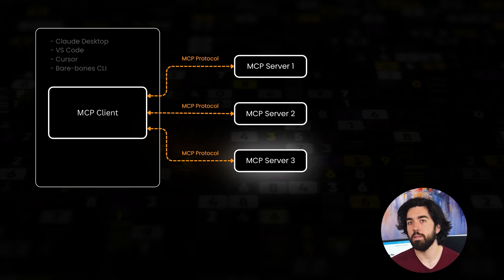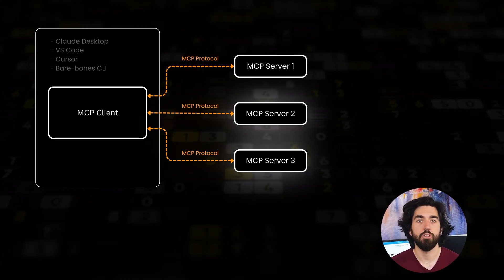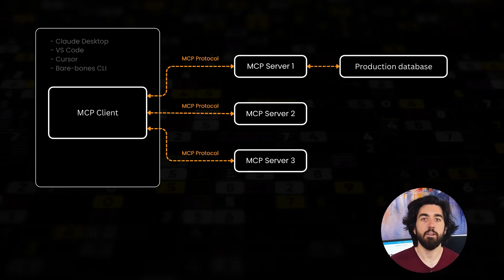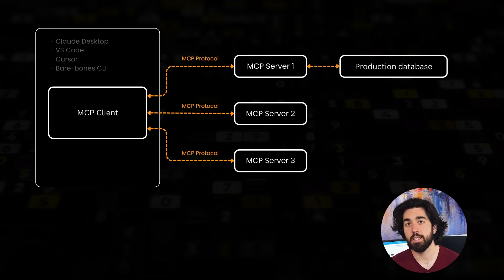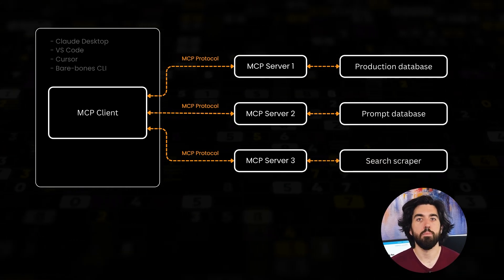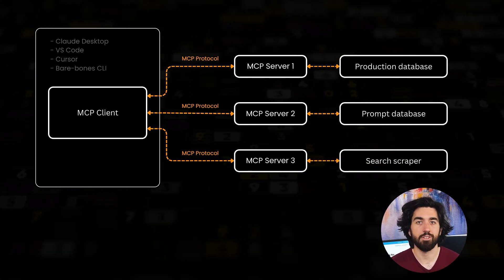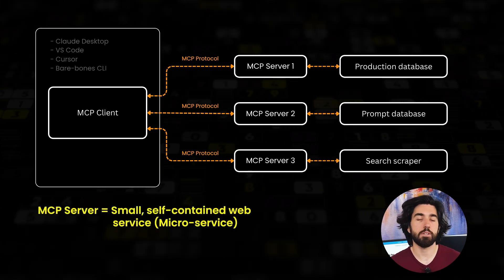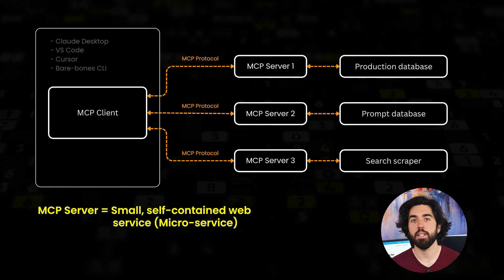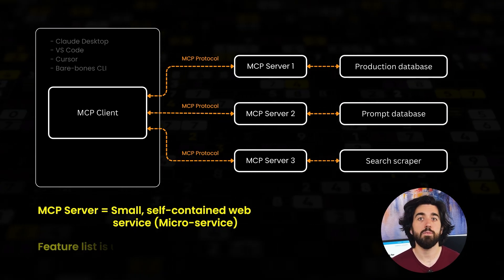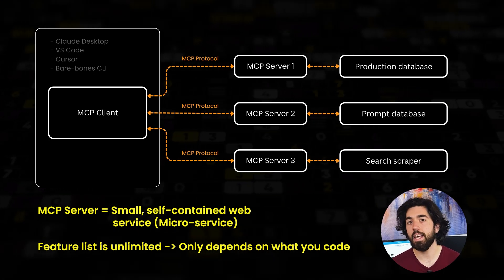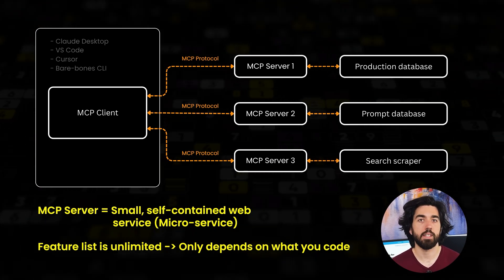At launch, the client pings one or more MCP servers, each of which can sit on your laptop, your team's intranet, or halfway across the planet. One server might expose a direct line to a production database, another publishes a stash of battle-tested prompts, a third wraps a Brave Search scraper for finding sources. Because an MCP server is basically a small, self-contained web service — a microservice — whose behavior is defined by the MCP specification, its feature list is limited only by what you code. And once you publish it, any MCP client with the proper credentials can use it.